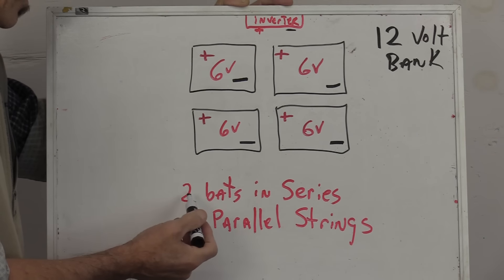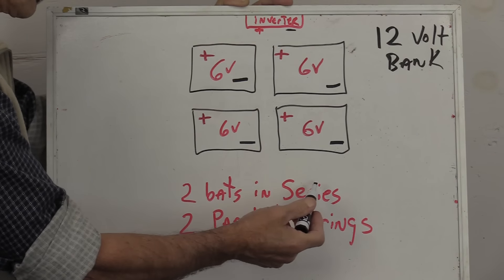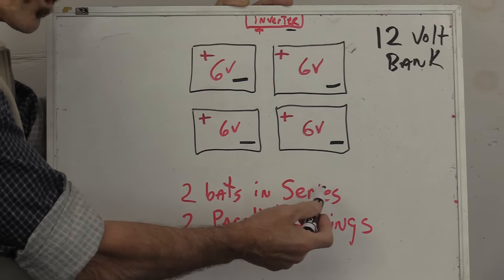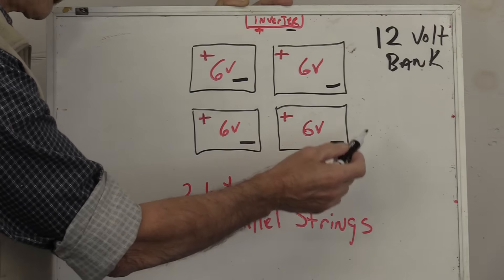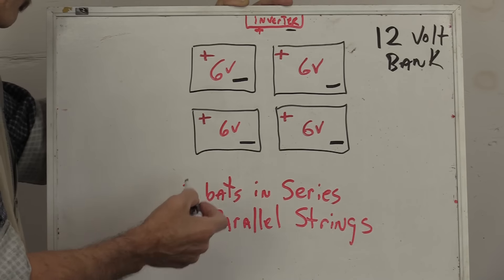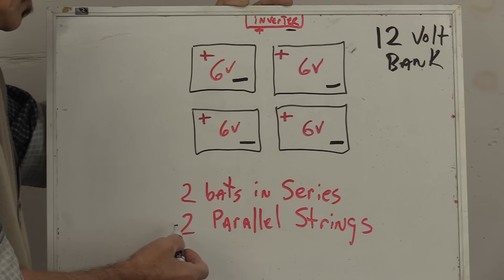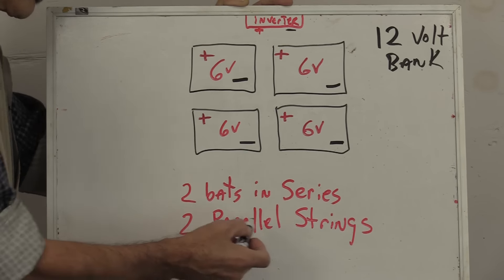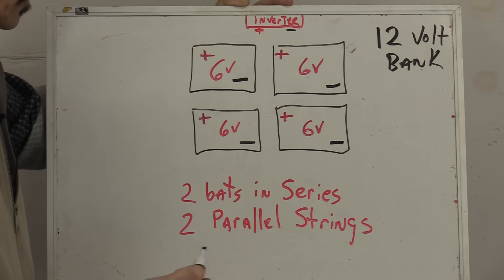What we're going to do is tie two batteries in series, two six volt in series that will equal 12 volt battery. Now we've got several banks of those and we want to tie them all in parallel strings. So this is basically how you do it.